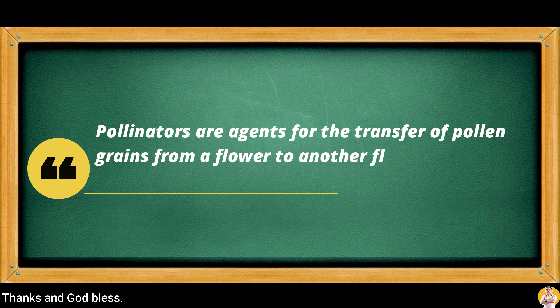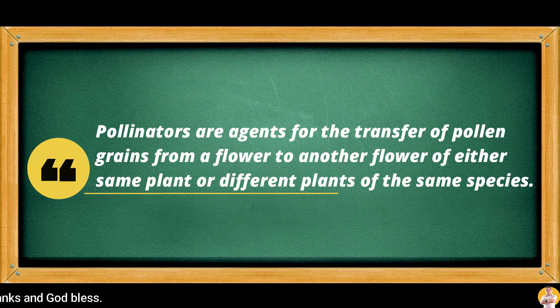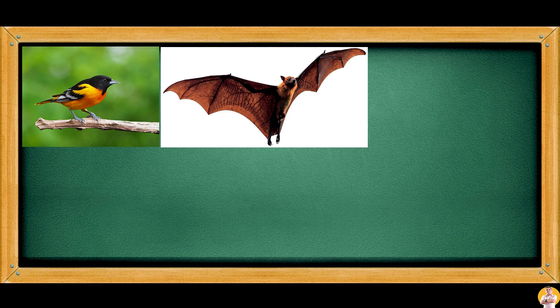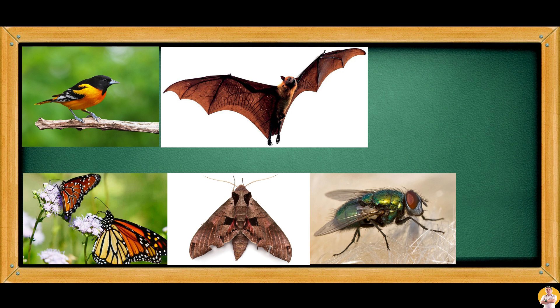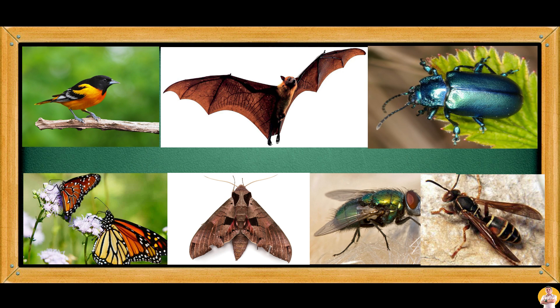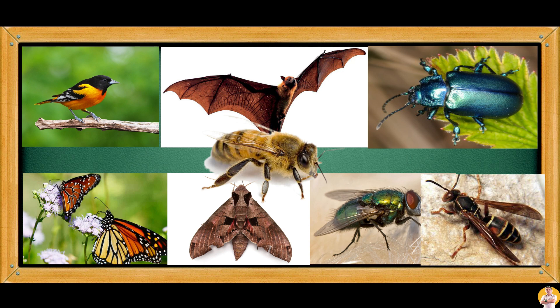Sexual reproduction through pollination is possible with the help of pollinators. Pollinators are agents for the transfer of pollen grains from a flower to another flower of either the same plant or different plants of the same species. Birds, bats, butterflies, moths, flies, beetles, wasps, small mammals, and most importantly bees are examples of pollinators.